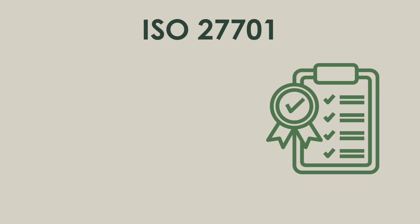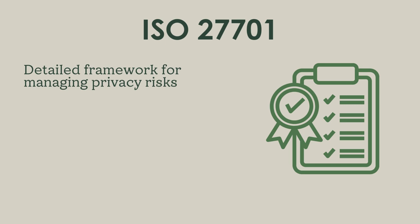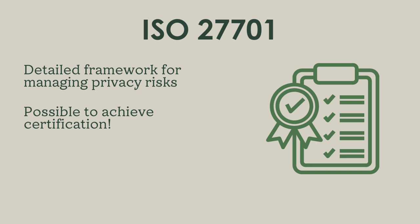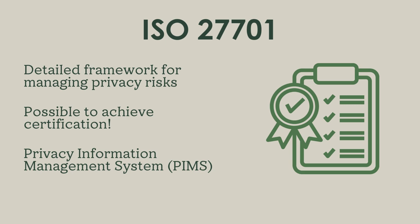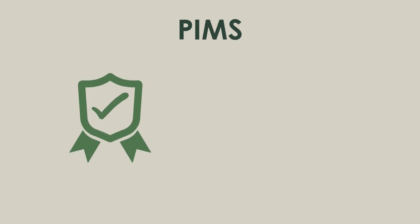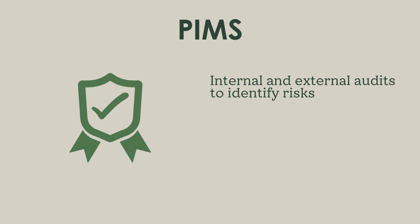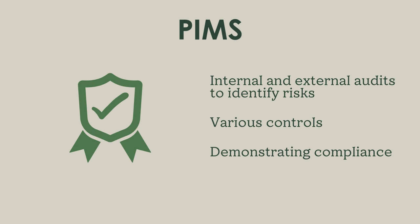While the GDPR is a legally binding regulation for any company that processes the personal information of EU residents, ISO 27701 puts this into concrete practice by offering a detailed framework for managing privacy risks. Like many other international standards, it's a set of steps that organizations can voluntarily undertake, and where they can apply for certification — proof that they follow the requirements of the standard, demonstrating to the world that they are ISO 27701 certified. What ISO 27701 does in particular is ensure that an organization establishes a Privacy Information Management System, or PIMS. A PIMS integrates various privacy controls into an organization's existing security management practices, providing a systematic approach to privacy-related concerns including audits, encryption, access management, employee training, and demonstrating compliance with privacy regulations such as the GDPR.